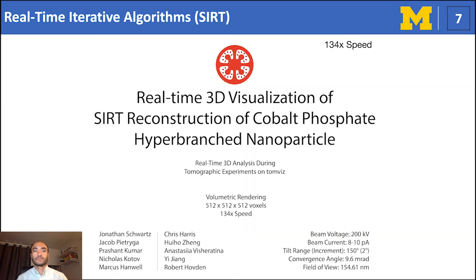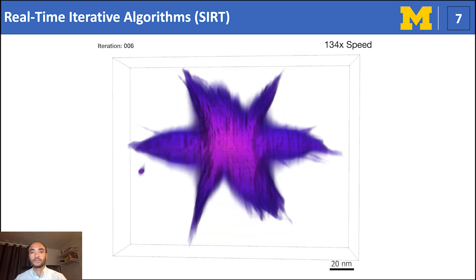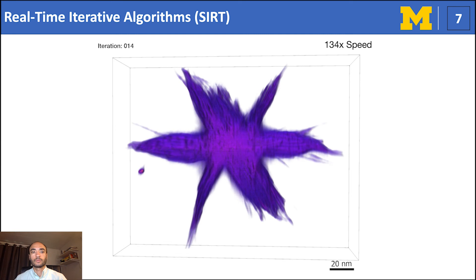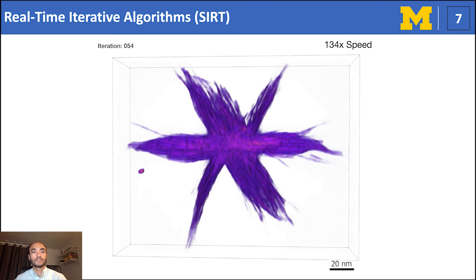TomViz contains real-time functionality for any iterative algorithm, including SIRT. Here is a SIRT demonstration for a 512-cubed cobalt diphosphate hyperbranched nanoparticle reconstructed for 100 iterations. We see the reconstruction begins with a loose estimate consisting mostly of low-frequency information. As the computation exceeds beyond 50%, finer structure becomes visible. As we pass 80%, we cannot visually see any differences per iterate, and we can safely assume we're close to converged.